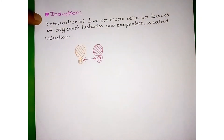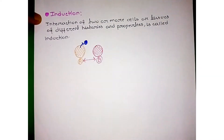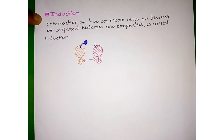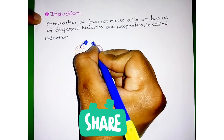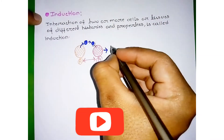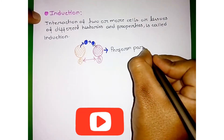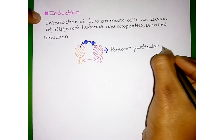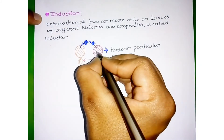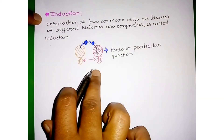Cell A produces a signal — a signal protein. This signal protein binds with the specific receptor present on cell B. Once this signal protein binds with that receptor, some cell signaling cascade occurs, some mRNA forms, and ultimately cell B performs a particular function.